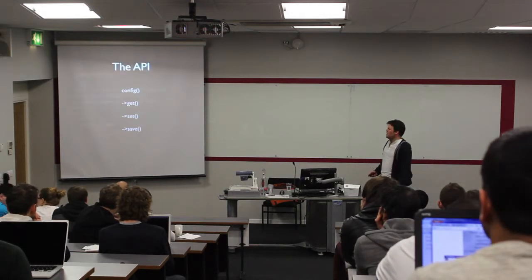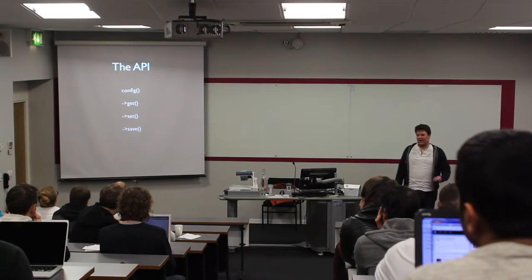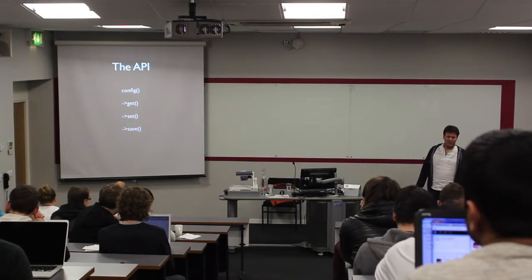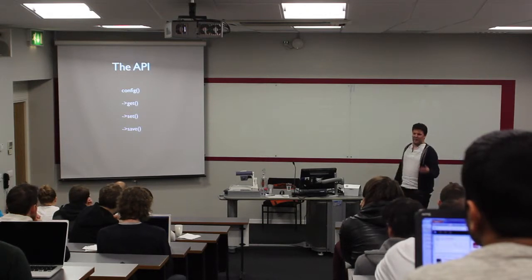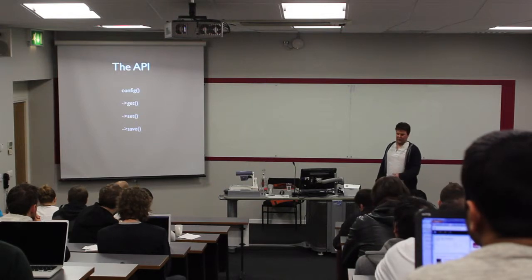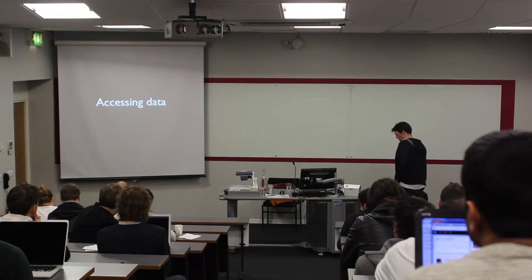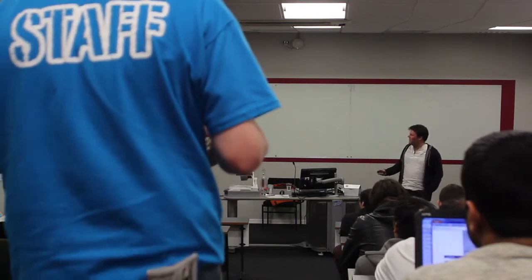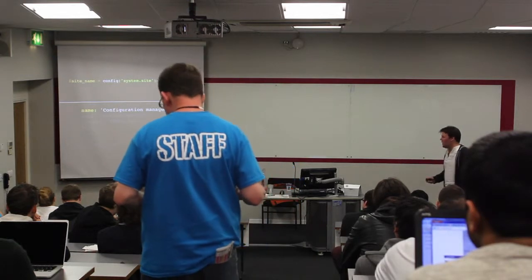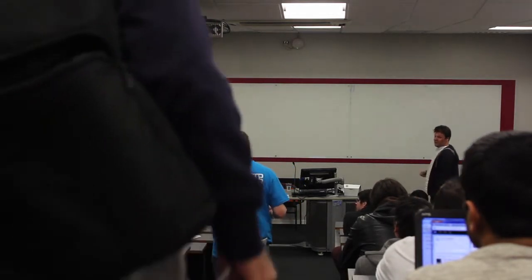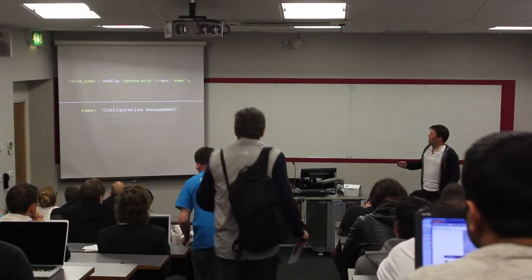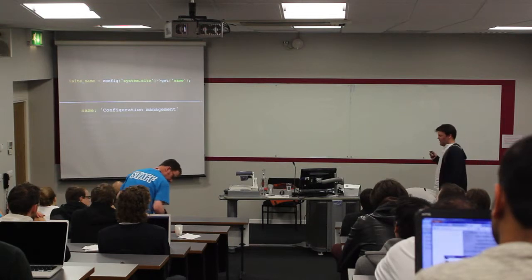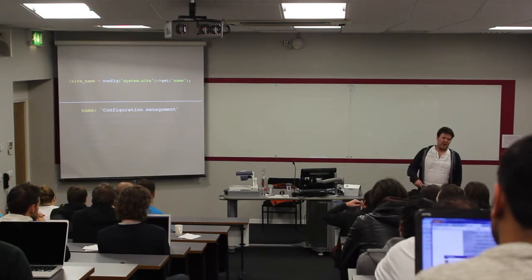In order to interact with this file, we have an API — an expressive API much like the Drupal 7 database API — with simple functions to get, set, and save information to the cache and file system. To access data in CMI, there's a function called config() which you pass a configuration object name to — in this case, system.site. It directly references the file name. You tell it what key you want to get, for example 'name', to get the site name from the file. If it's not in the cache, it will go and read the file, put it in the cache, and return it.